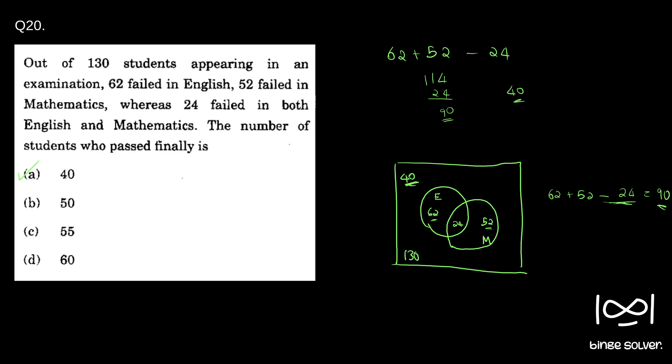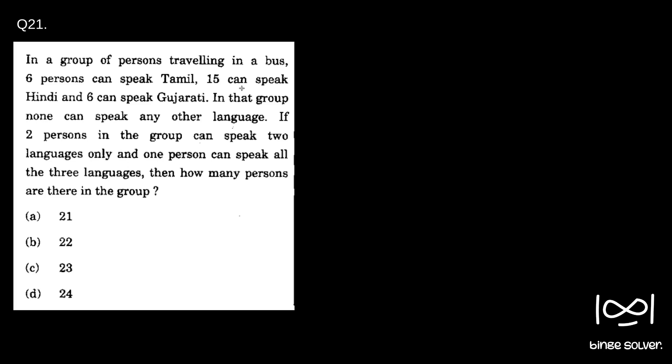Moving on to question 21. In a group of persons traveling in a bus, six persons can speak Tamil, 15 can speak Hindi, and six can speak Gujarati. None can speak any other language. Two persons in the group can speak two languages only, and one person can speak all three languages. How many persons are there in the group?